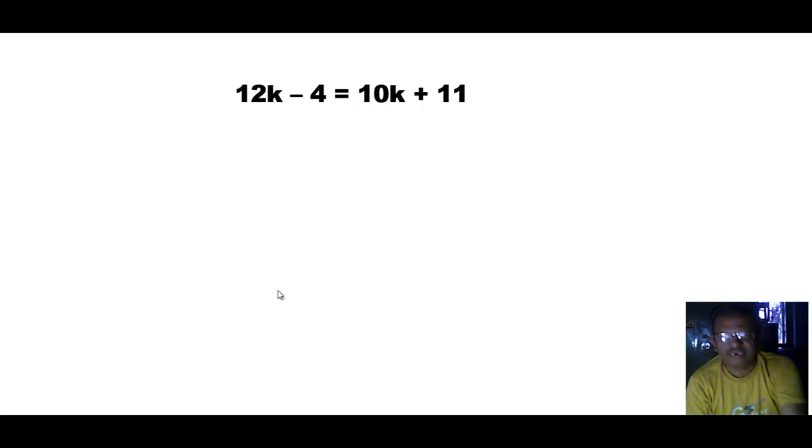Solving this linear equation, we get 2k equals 15, and therefore dividing by 2, we get k equals 15 by 2. So the required value of k is 15 upon 2.